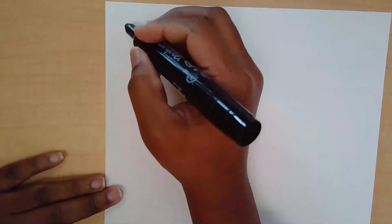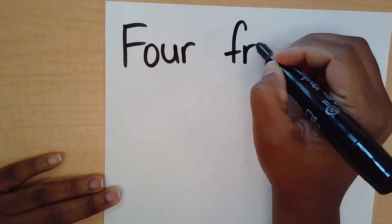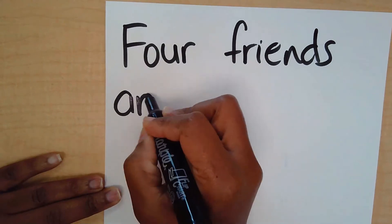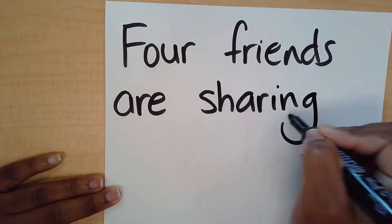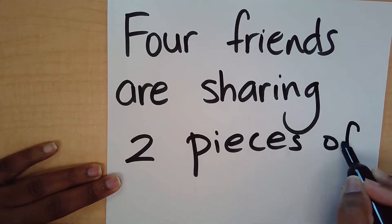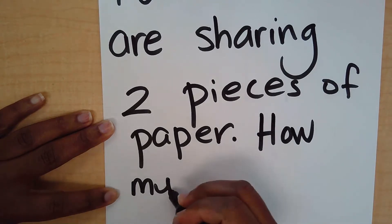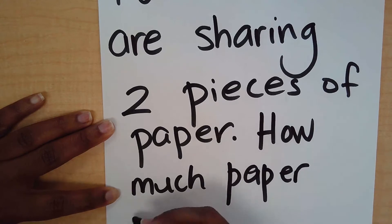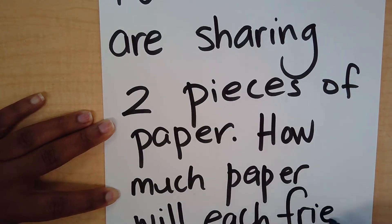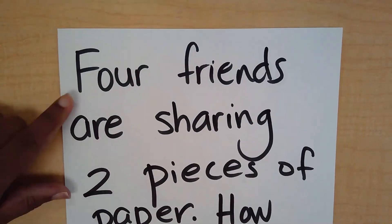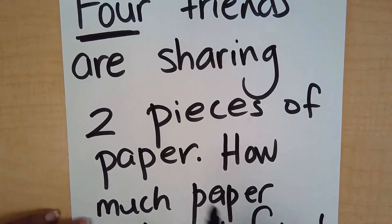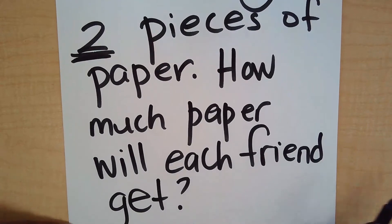So I'm going to do a question for us: four friends are sharing two pieces of paper. How much paper will each friend get? Now remember, we have to share equally. So four friends are sharing two pieces of paper. How much paper will each friend get? We have to remember that this needs to be done equally. So what I'm going to do is draw my two pieces of paper.